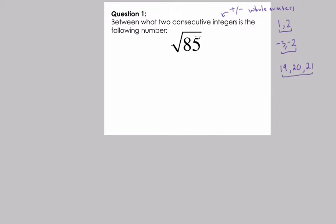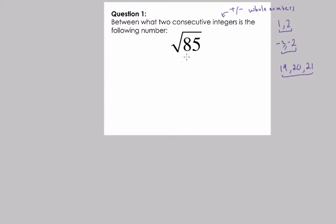The square root of 85 is a number that is irrational. In other words, we cannot represent this number as the ratio of two rational numbers — which is a fancy way of saying we can't write this thing as a fraction. We can only represent it with a decimal that never ends and never has a repeating pattern, or we can tell between what two integers this thing lies.